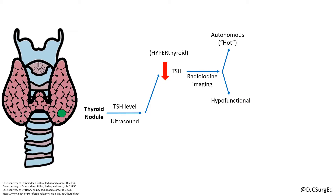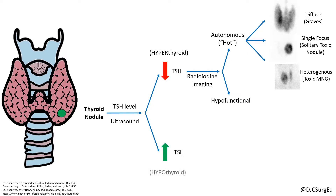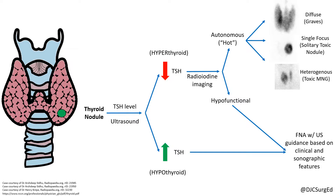Diffuse uptake is suspicious for Graves' disease, whereas a single focus is concerning for a solitary toxic nodule, and heterogeneous uptake with multiple nodules is consistent with toxic multinodular goiter. Malignancy is rare with hot nodules, so hypofunctional nodules or euthyroid or hypothyroid patients with a nodule should be considered for FNA with ultrasound guidance.